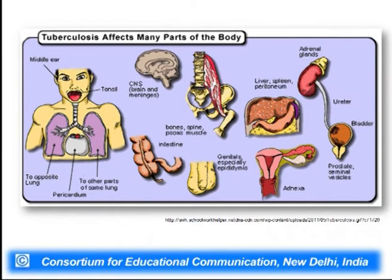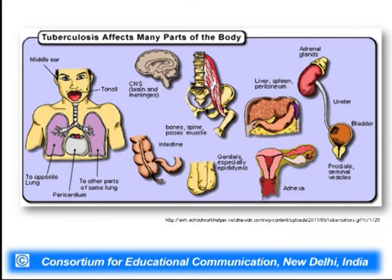Tuberculosis affecting the lungs is called pulmonary tuberculosis, while tuberculosis affecting other parts of the body is called extra-pulmonary tuberculosis. Extra-pulmonary tuberculosis can affect the central nervous system including the brain and meningitis, the intestine, bones, spines, muscle cells, genitals especially the epididymis, liver, spleen, prostate, and the urinary system.